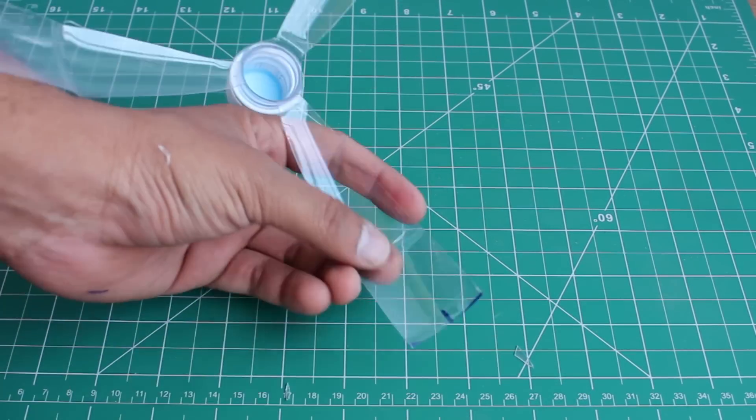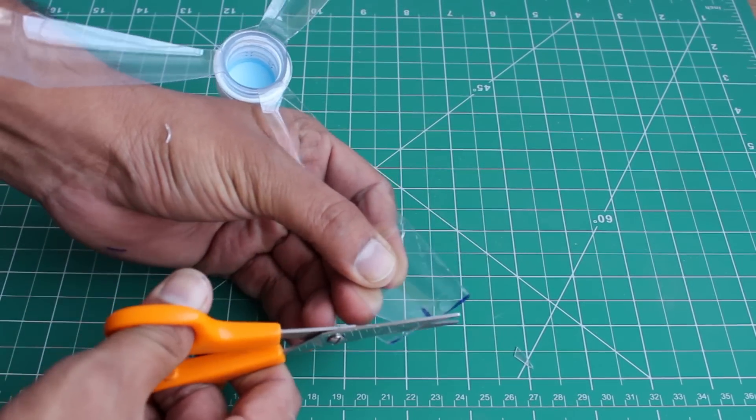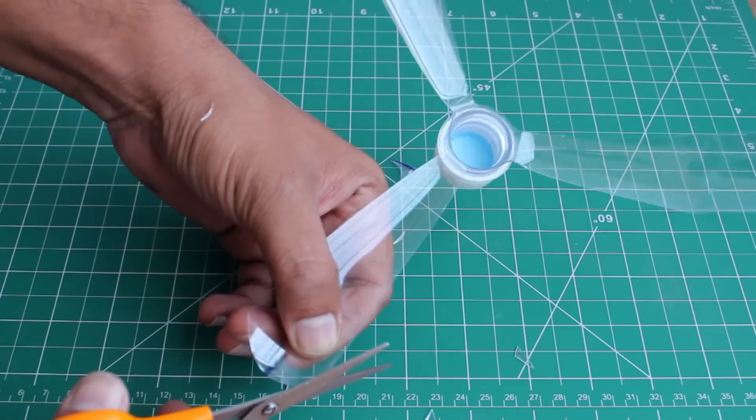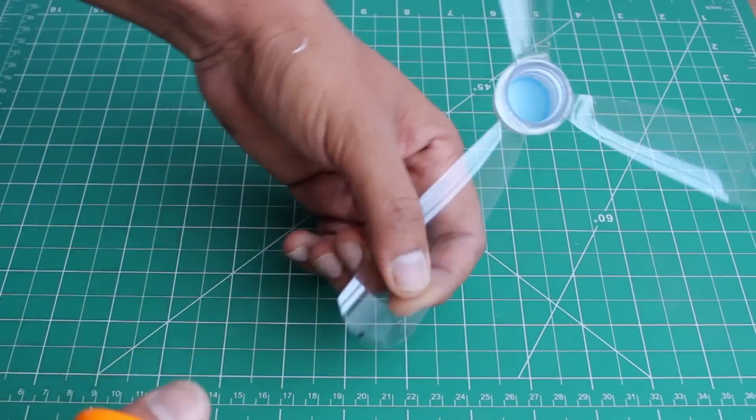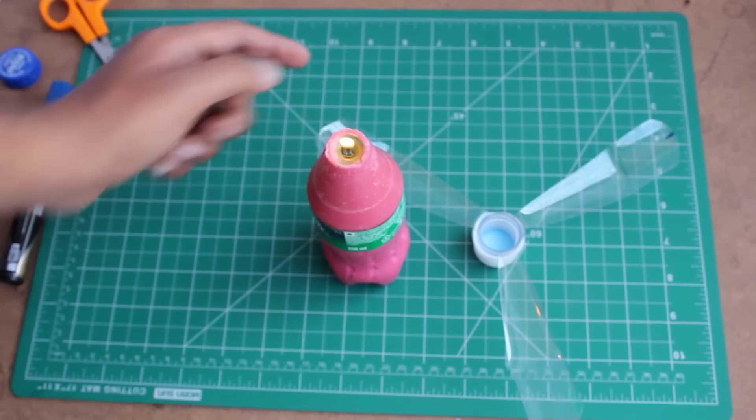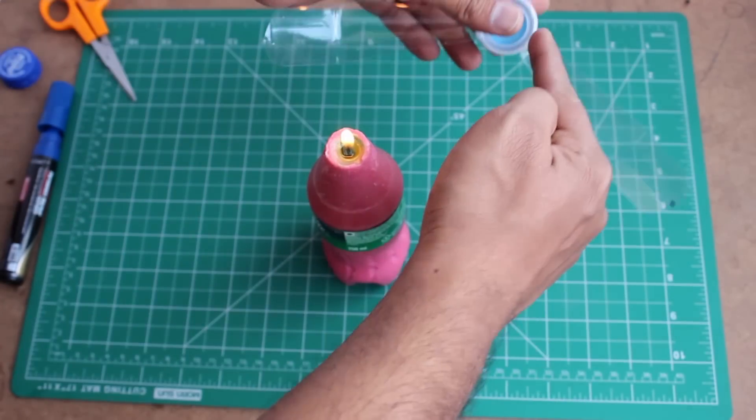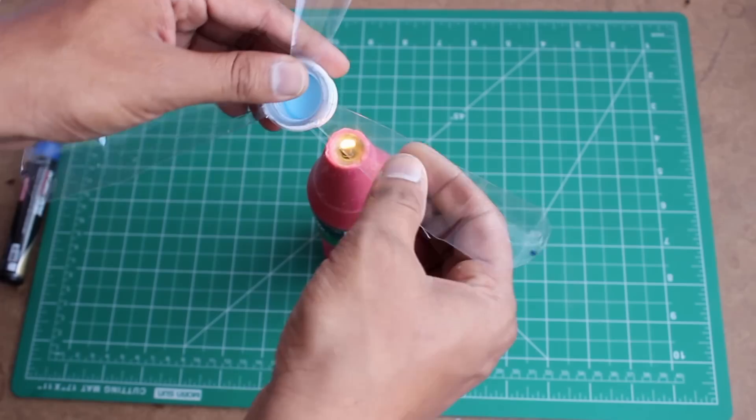By using the scissor, curve the edges of the wings. By using the candle flame, slightly bend the wings. Make sure that you are bending all the wings in the same direction.